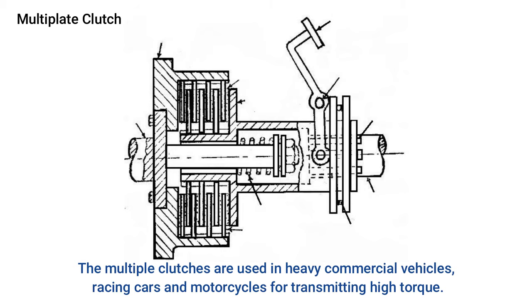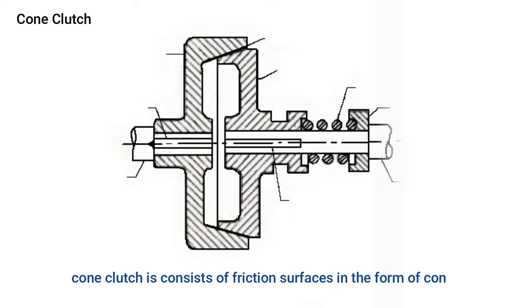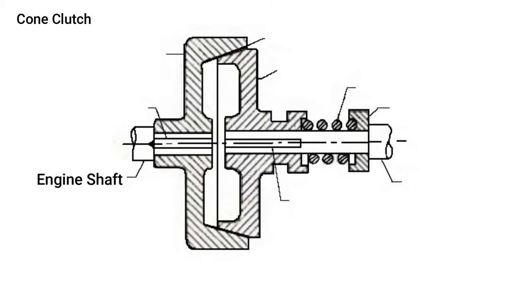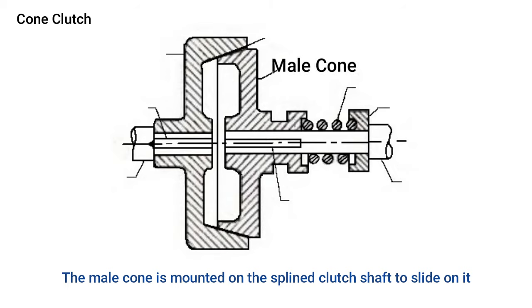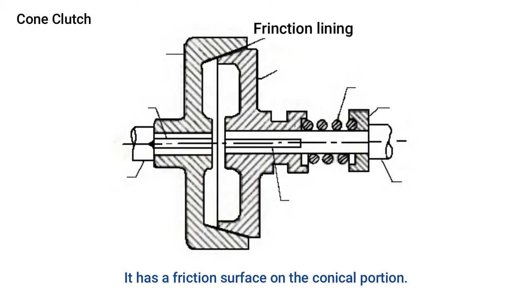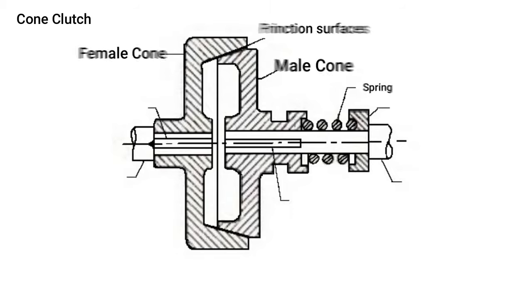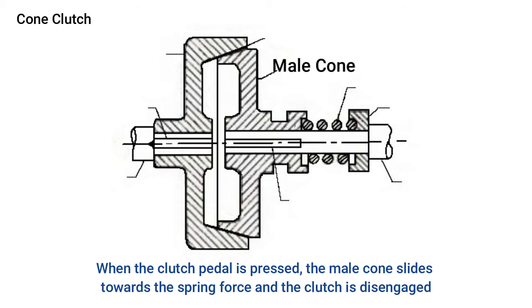Multiple clutches are used in heavy commercial vehicles, racing cars, and motorcycles for transmitting high torque. The cone clutch consists of friction surfaces in the form of cones and uses two conical surfaces to transmit torque by friction. The engine shaft consists of a female cone and a male cone. The male cone is mounted on a splined clutch shaft and has a friction surface on its conical portion. When the clutch is engaged, the friction surfaces of the male cone contact the female cone; pressing the clutch pedal slides the male cone away, disengaging the clutch.